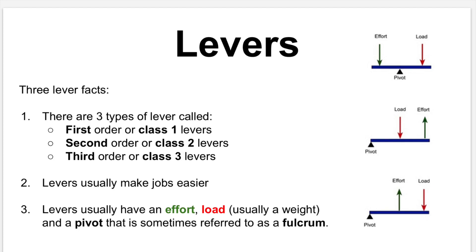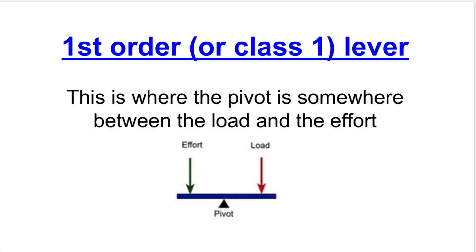Levers are a mechanical device that are there to make jobs easier. As you can see from the lever facts, there are three main types. A first order or class one lever has a pivot somewhere between the load and the effort.